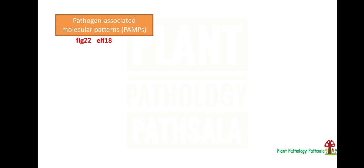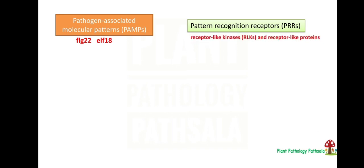Then, how are these pathogen-associated molecular patterns recognized? These are recognized by a special type of receptor called pattern recognition receptors. Examples of PRRs are receptor-like kinases (RLKs) and receptor-like proteins. These are the proteins or receptors which are helpful in the recognition of PAMPs.